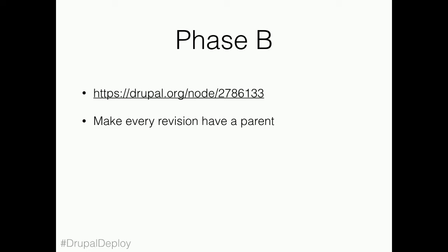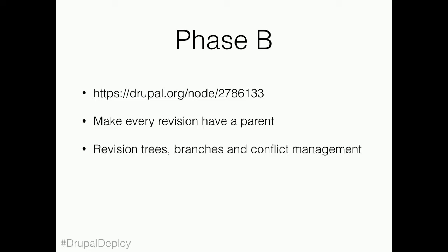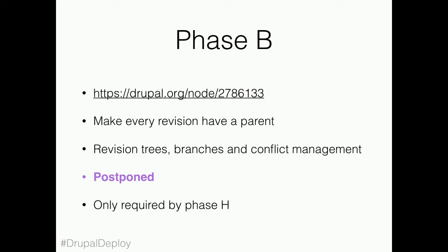Phase B. Initially we had in the early phases here to introduce the concept of parent revisions. This is to allow branches and sort of parallel changes to entities — introducing things as revision trees, branches, and ultimately conflict management for concurrent work. We've postponed this phase; we're waiting on actually the very last phase to finish this line of work.